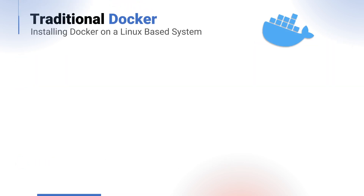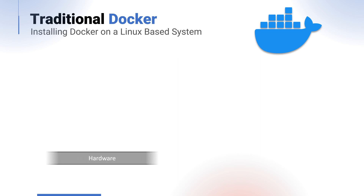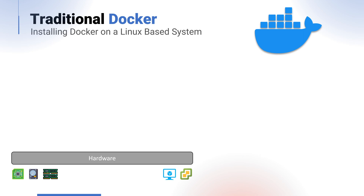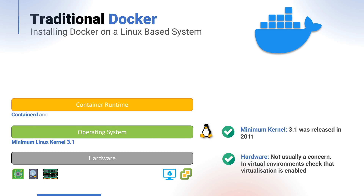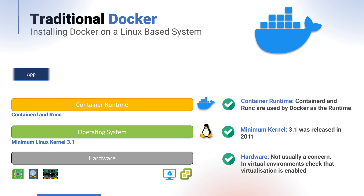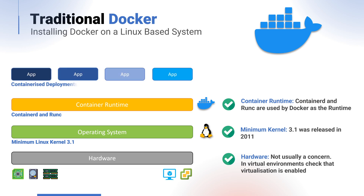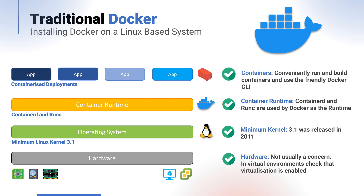To begin, let's look at the traditional means of running Docker. Docker was originally released back in 2013. You have your hardware at the bottom — this could be physical or virtualized hardware with virtualization enabled. The next layer is the operating system, with a minimum requirement of a kernel greater than 3.1, so any modern Linux distribution will be fine. When we install Docker, this sets up our container runtime that in turn uses containerd and runc to run containers, and we can then use the CLI to conveniently run and build containers.